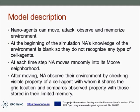In contrast, nano agents can move, attack, observe, and memorize the environment. At the beginning of the simulation, nano agents' knowledge of the environment is blank — they do not recognize any type of cell agent, and their memory is limited. At each time step they move randomly, then observe their environment by checking the visible property of a cell agent with whom they share a grid location, and compare the observed property with those stored in their limited memory. Since memory is empty at the beginning, they rapidly learn about the environment.